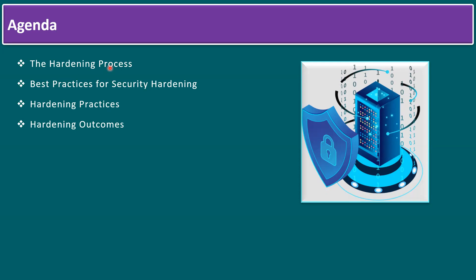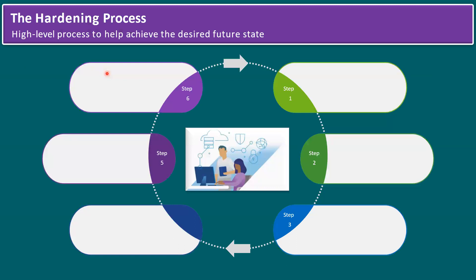All these components — systems, networks, applications, and storage — are secured by reducing vulnerabilities and minimizing potential attack surfaces. In addition, hardening involves configuring and strengthening the system's security settings and policies to make it more resistant to unauthorized access, cyber attacks, and other security threats.